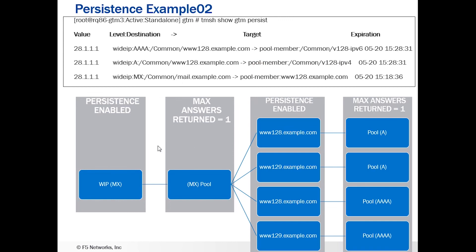So in order to get end-to-end persistence on a wide IP in this structure, you need to enable persistence all the way through and set your max answers returned equal to 1. This ensures that persistence entries are created and that only one answer is placed in the response — because we can't make a decision on what to persist on if more than one answer is being returned.